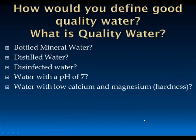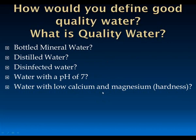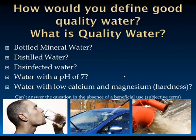How would you define good water quality? Is it bottled mineral water, distilled water, or disinfected water? With distilled water, all the minerals have been taken out. With disinfected water, all the microbes have been taken out. Mineral water is legally required to have 250 milligrams per liter of minerals or salts. What about a neutral pH of 7, or water that has low calcium and magnesium? The answer is that we can't address this question without a beneficial use. Water quality is a subjective term, and every different use has different requirements.